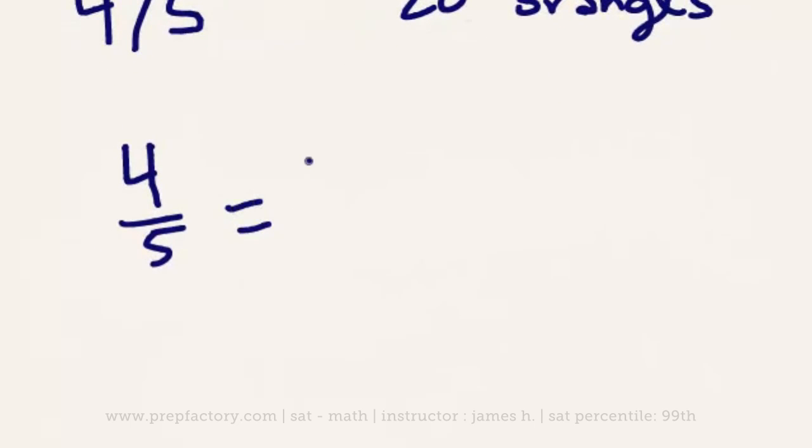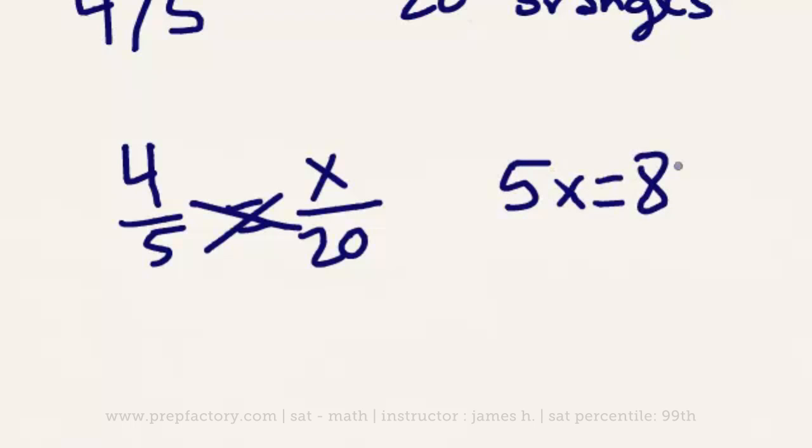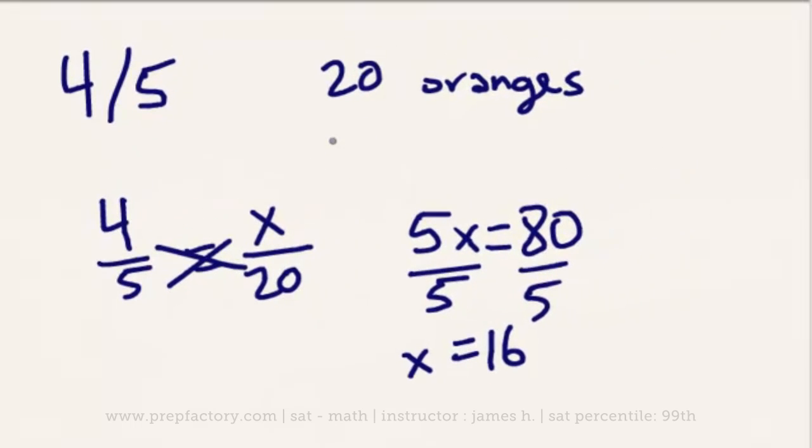So if we know that our ratio of apples to oranges is 4 to 5, we know that needs to equal our apples, which we'll represent with an X, over our oranges, which we know is 20. So now we're going to do what's called cross-multiplying, where you just multiply one denominator by the other numerator, vice versa. So we know then that 5X is going to equal 80. And then we divide by 5, divide by 5, and we know that in this case then our X is going to equal 16, which means that if we have a ratio of 4 to 5 apples to oranges, if we have 20 oranges, we are going to have 16 apples.